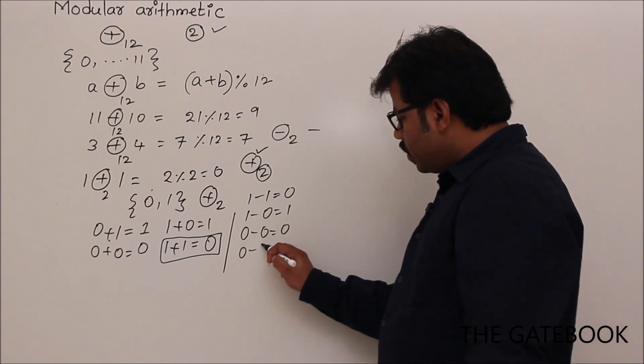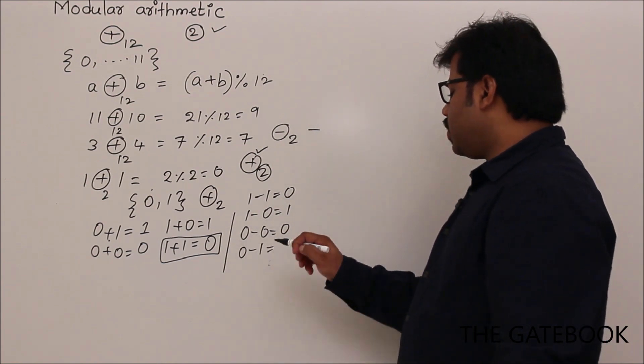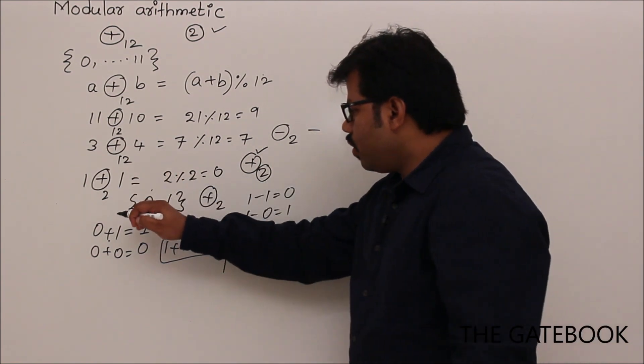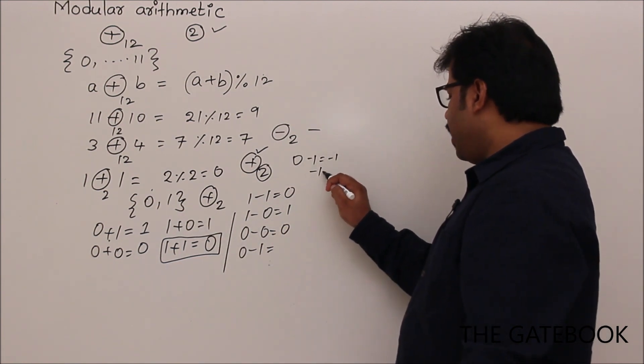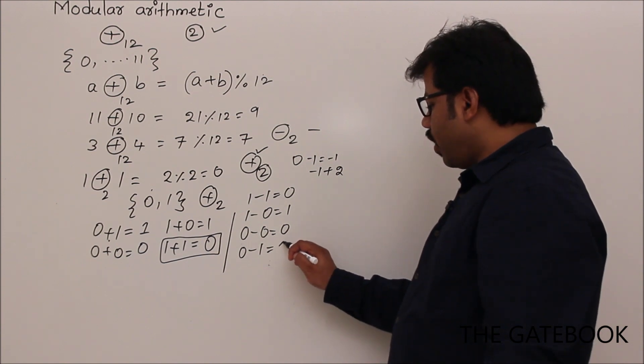But 0 minus 1 is not minus 1 here because the domain is only 0 comma 1, right? So that's why normal subtraction, you get minus 1. But here we have to add plus 2. So minus 1 plus 2 is 1.